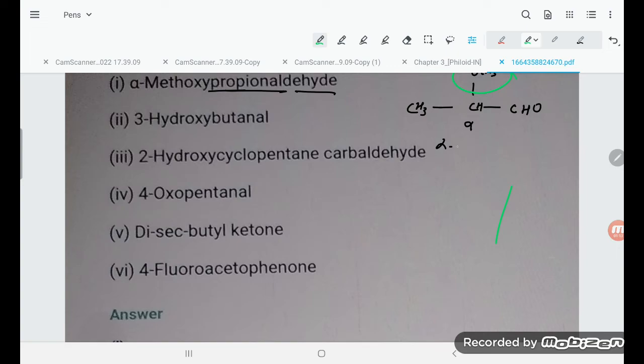Got it. So this is the alpha-methoxy-propionaldehyde, P-R-O-P-I-O-N-A-L-dehyde. So this is what is our answer, student. This is O-CH3 group, student. Don't get confused.